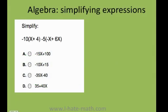Here we have an expression that we need to simplify. The first thing you need to do is multiply the negative 10 by every single term and the negative 5 also by every single term.